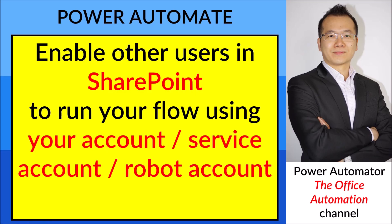Hi everyone, happy Saturday! Recently I've been using Power Apps and Power Automate a lot. One problem I face is when a user clicks a submit button in Power Apps and runs my Power Automate flow, it uses their credentials — then they can't send email and they can't update SharePoint. This video is to show you how to enable other users in SharePoint to run your flow using your account, your service account, or your robot account.